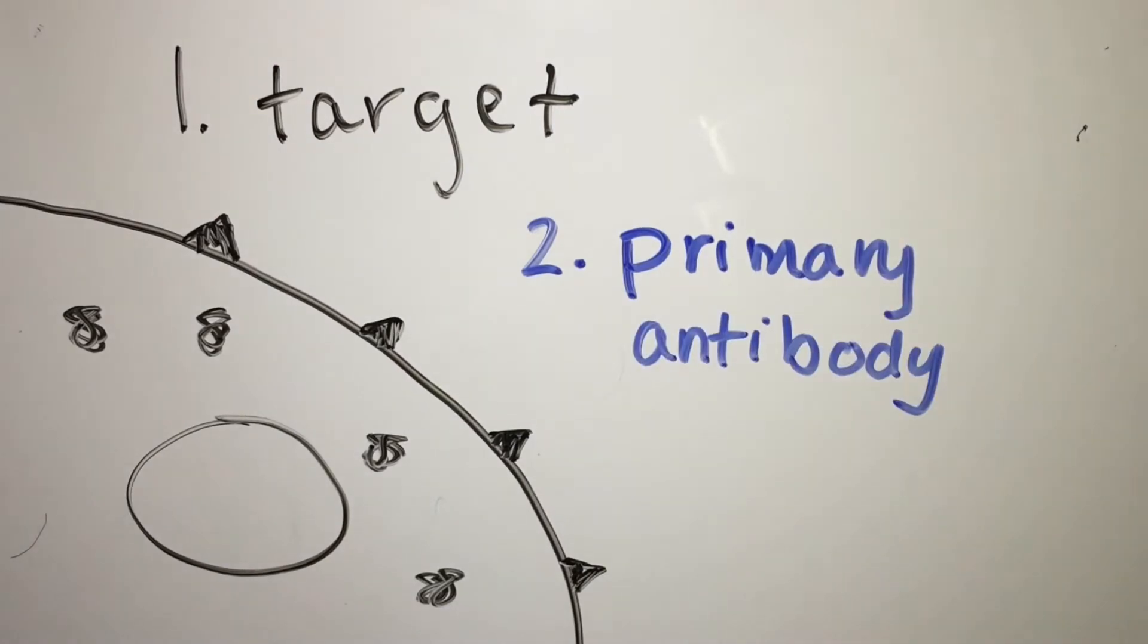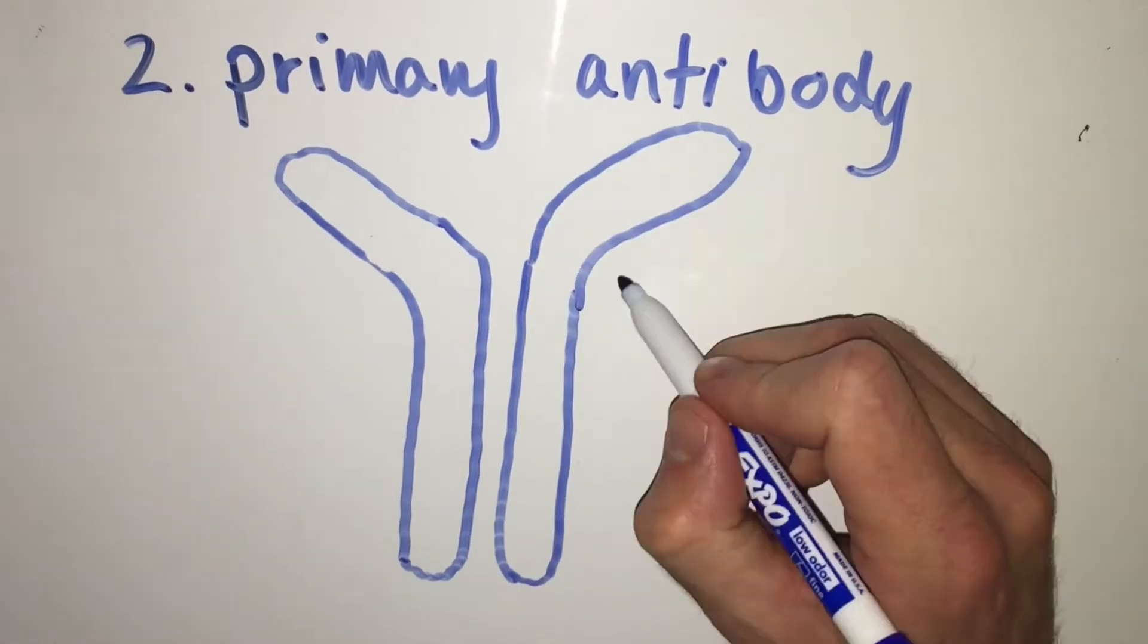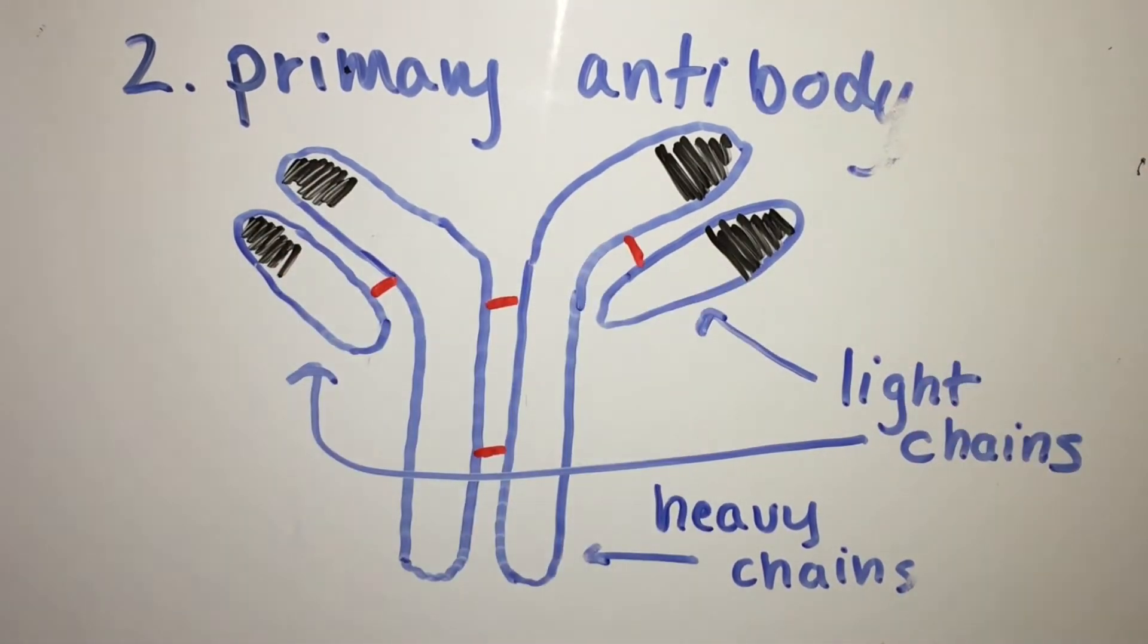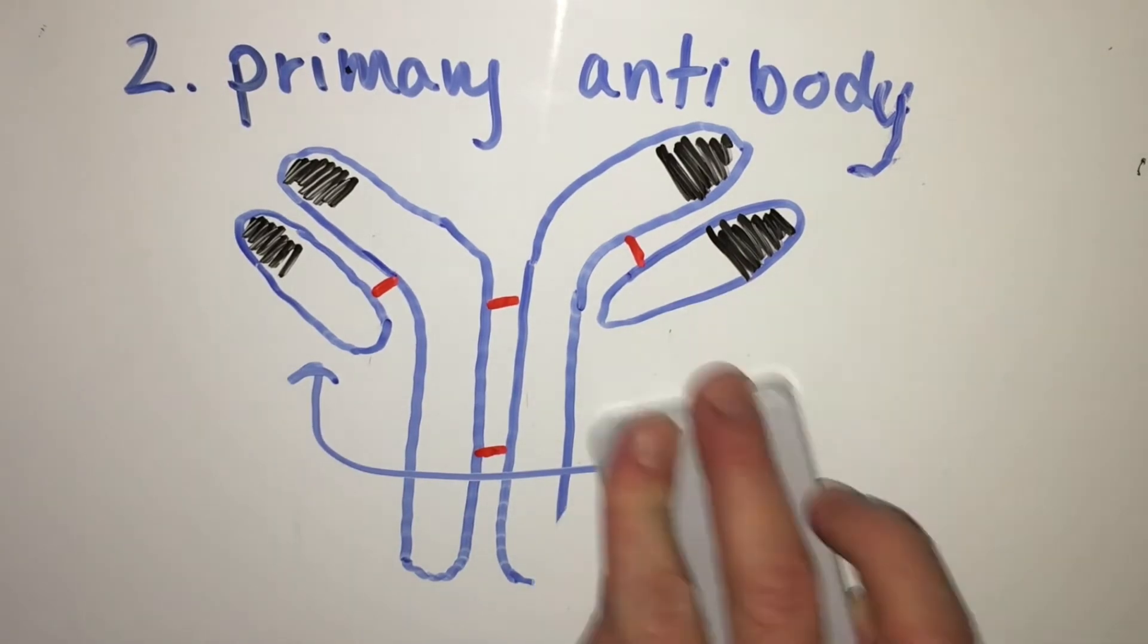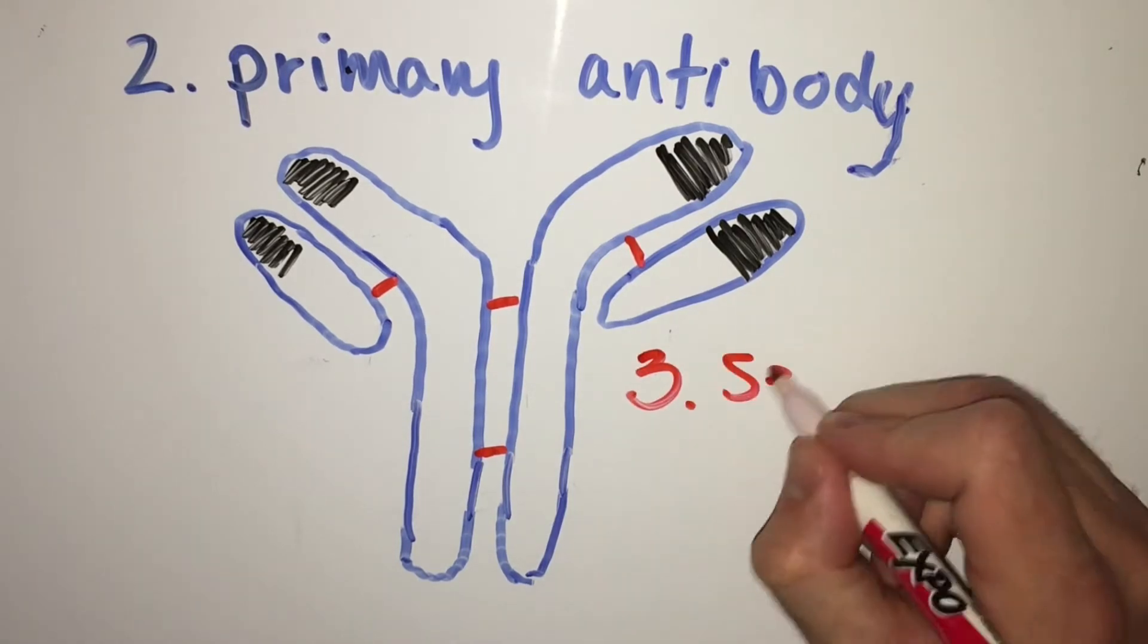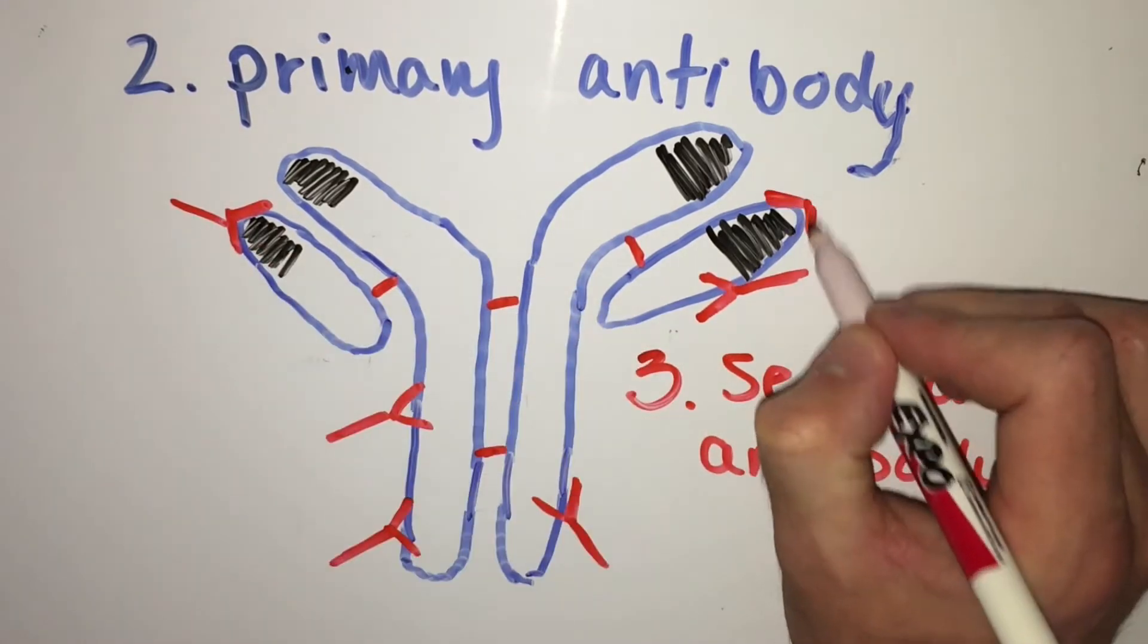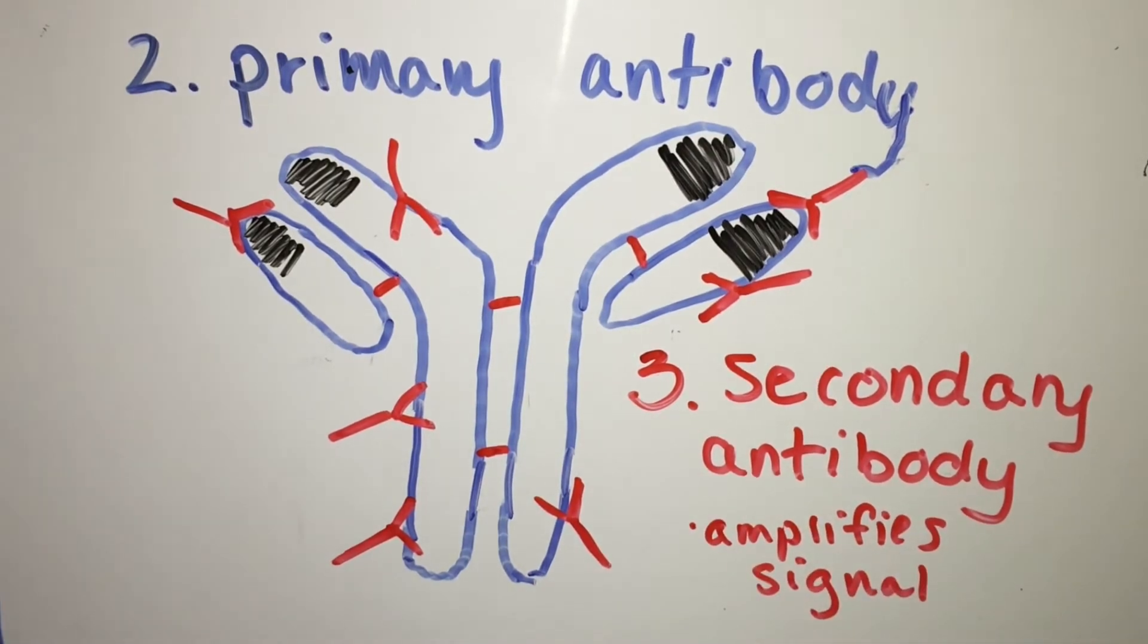Next is the primary antibody, which will bind directly to the target. Antibodies are proteins composed of two chains, a heavy chain and a light chain, which are connected by disulfide bonds. At one end of the antibody is the FAB region, which stands for antigen binding fragment. This is the region that varies between different antibodies, as it specifically binds to one certain antigen. Next is the secondary antibody, which can bind to the primary antibody. The use of a secondary antibody is not necessary in all immunocytochemistry procedures, but it helps to amplify the fluorescent signal, as many secondary antibodies can bind to the primary antibody in many locations.